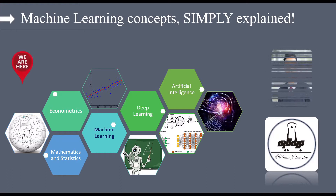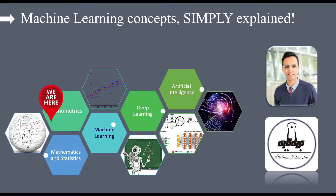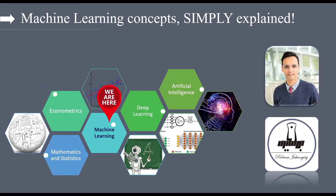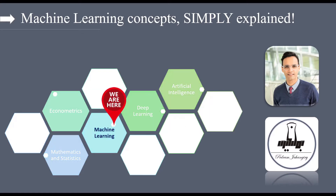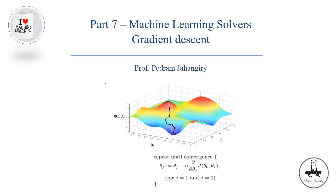Hey guys, my name is Pedran and I'm a professional practice assistant professor in finance. I'm also a CFA charter holder. This is another episode of my Crash Course in Machine Learning Concepts, Simply Explained. Part 7: Machine Learning Solvers. We are gradually getting to a point where we understand how machines actually learn the relationship in the data and how we learn the pattern. This is going to happen by the machines solving the parameters of the model, and today we are going to talk about the solvers.